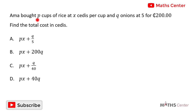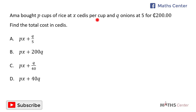Amma went to a shop and bought p cups of rice at X CDs per cup. The number of cups of rice she bought was p, and each cup cost X CDs.